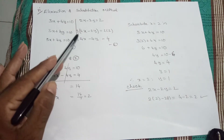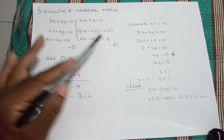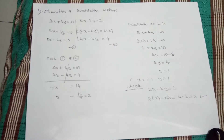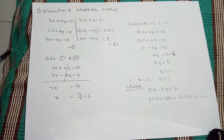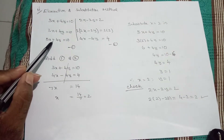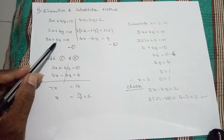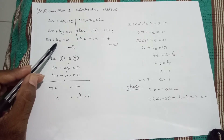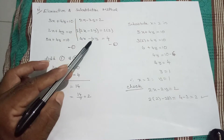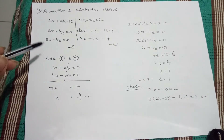2 times 2 is 4, 2 times 2 is 4, and 2 times 2 is 4. So now we have 4y in both equations. No need to think about plus or minus just yet — just observe the term 4y here and 4y there.